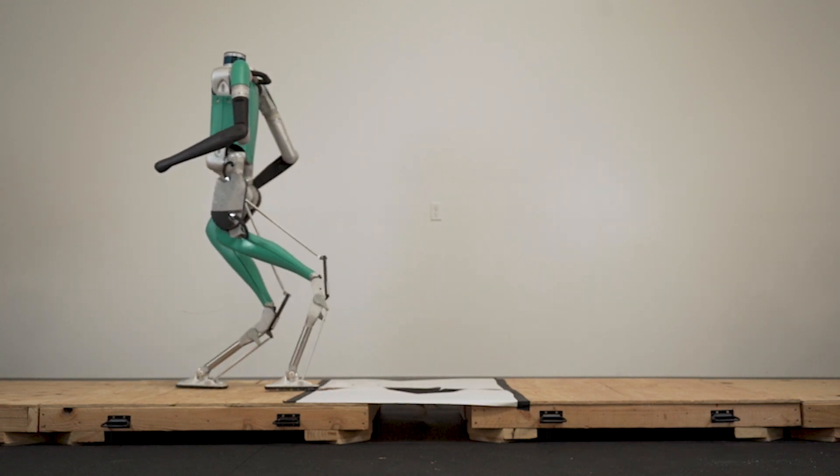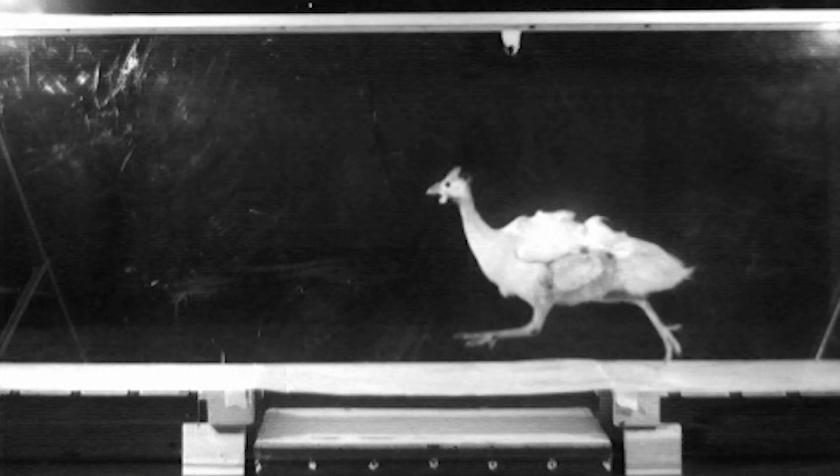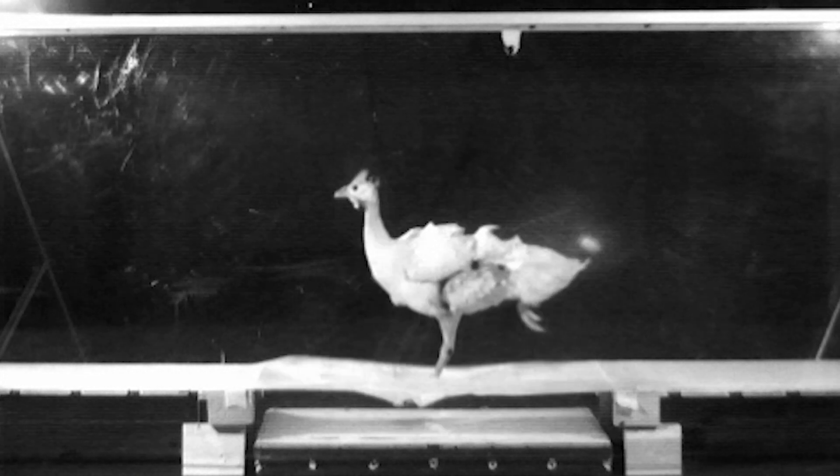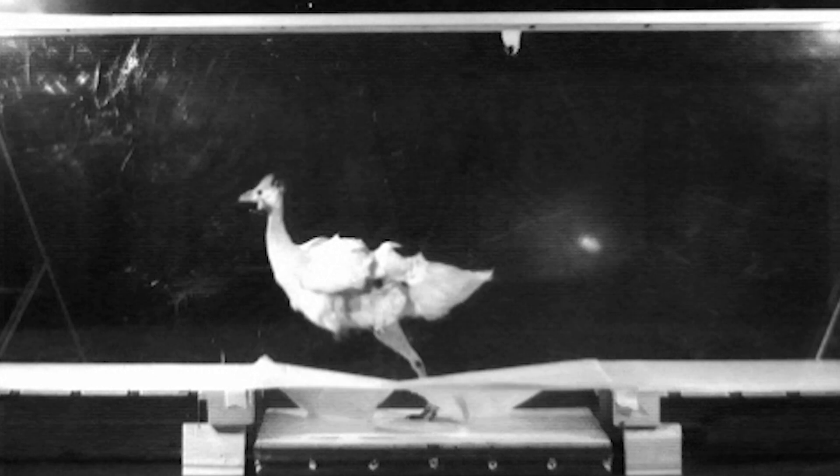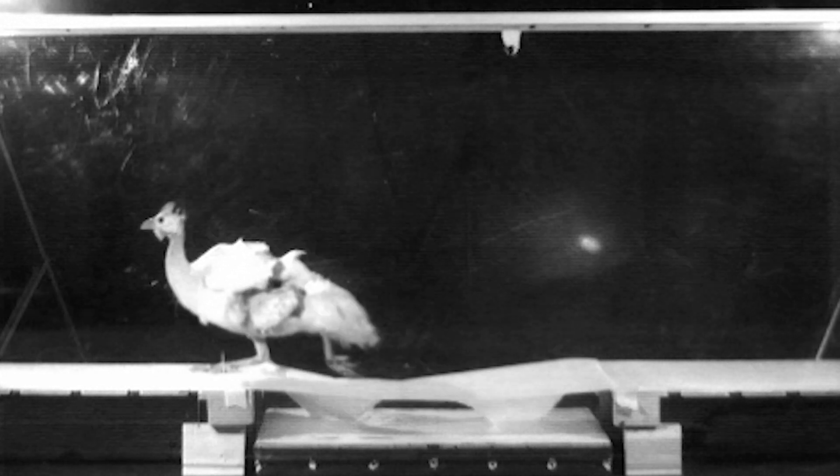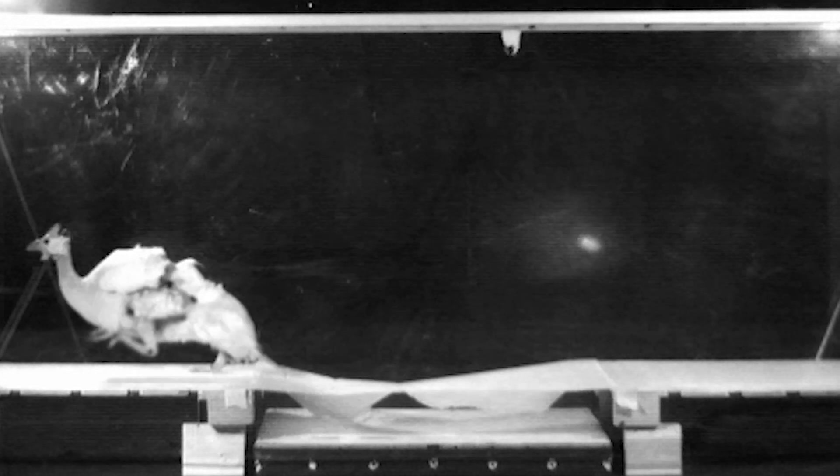In the guinea fowl's case, it has generations and generations of evolution that have led it to have this kind of compliant, flexible structure to its leg and also this very fast reflexive behavior that can deal with these sudden disturbances.